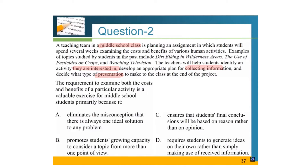The requirement to examine both the costs and benefits of a particular activity is a valuable exercise for middle school students primarily because it: A) eliminates the misconception that there is always one ideal solution to any problem; B) promotes students' growing capacity to consider a topic from more than one point of view; C) ensures that students' final conclusions will be based on reason rather than opinion; D) requires students to generate ideas on their own rather than simply making use of received information.